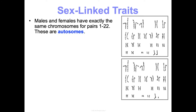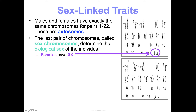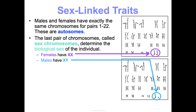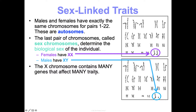A related but different concept is sex-linked traits. Males and females have the same chromosomes for pairs 1 through 22 — the autosomes. The 23rd pair are the sex chromosomes, which determine biological sex. Two X chromosomes means biologically female; an X and a Y means biologically male. The X chromosome has many genes affecting a wide range of traits, not just sex-related traits, while the Y chromosome has very few genes.